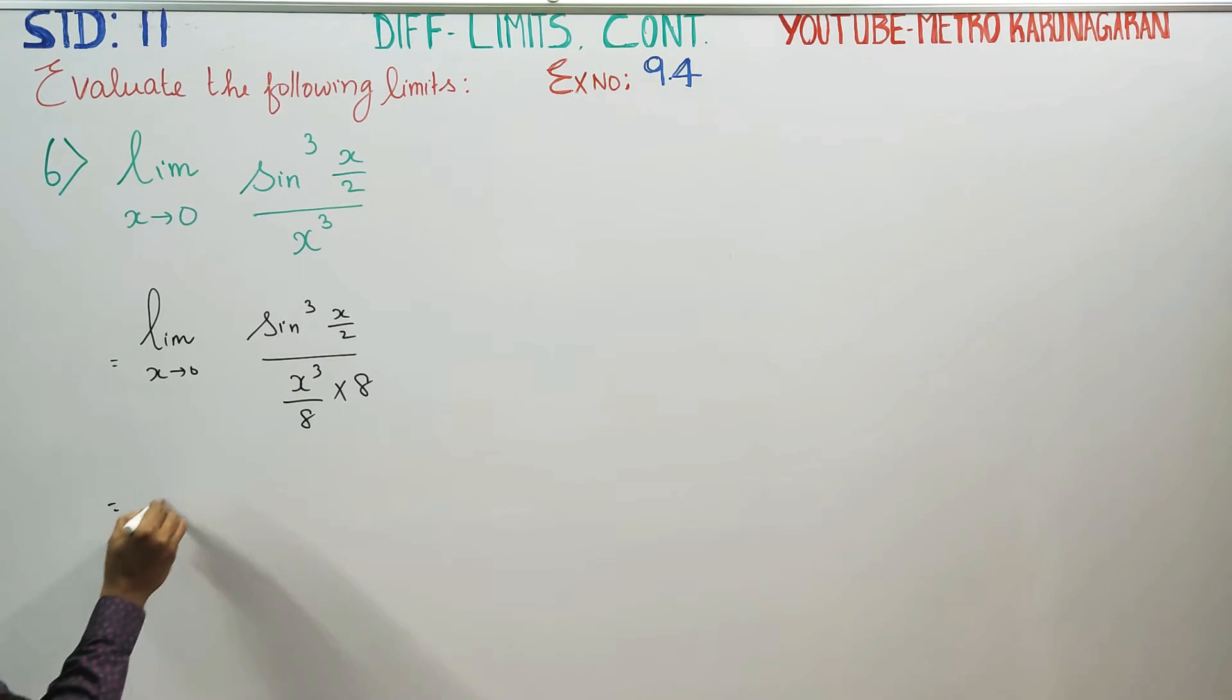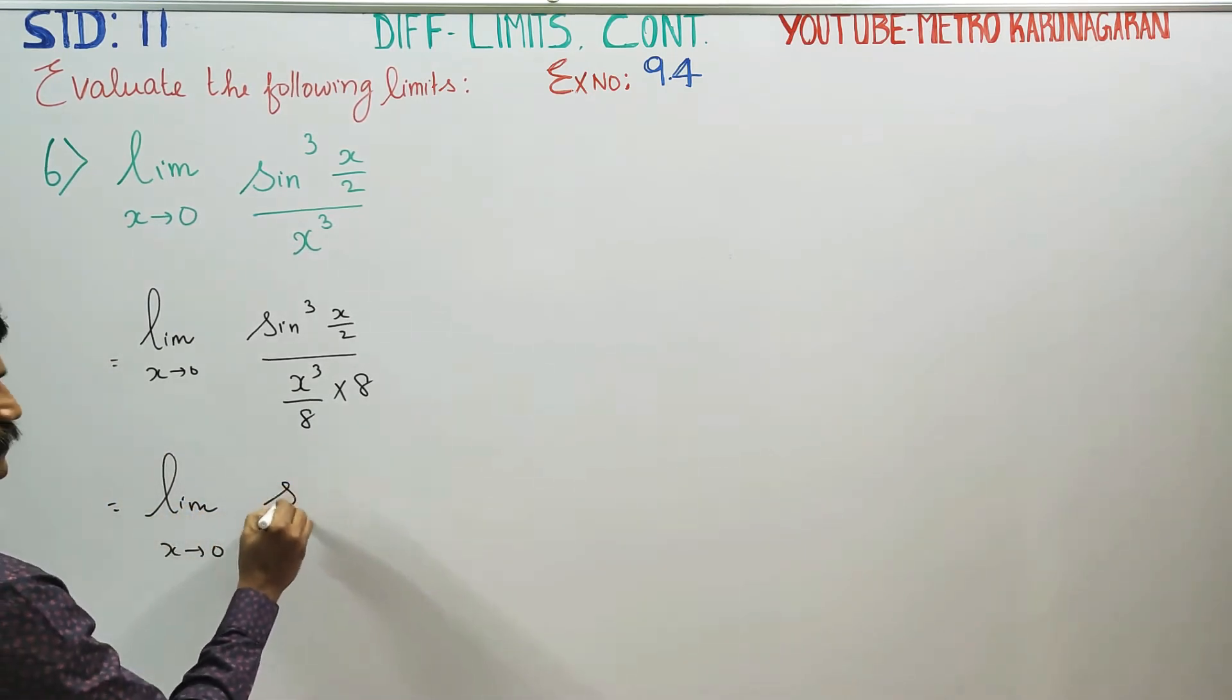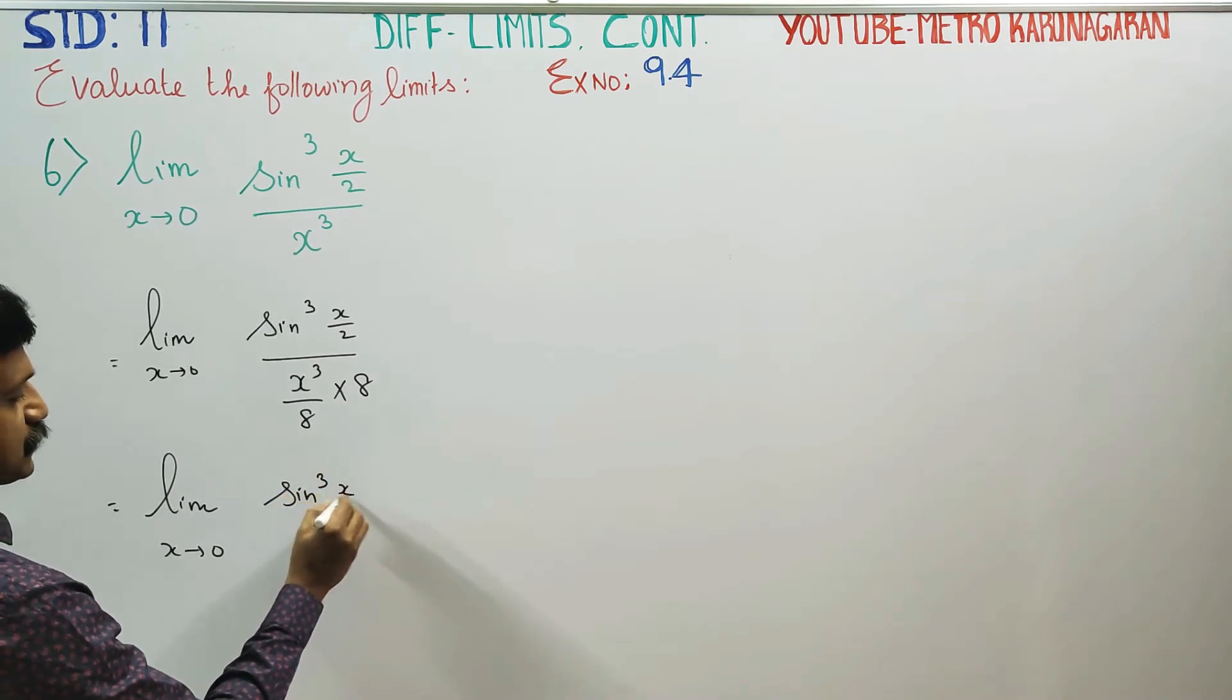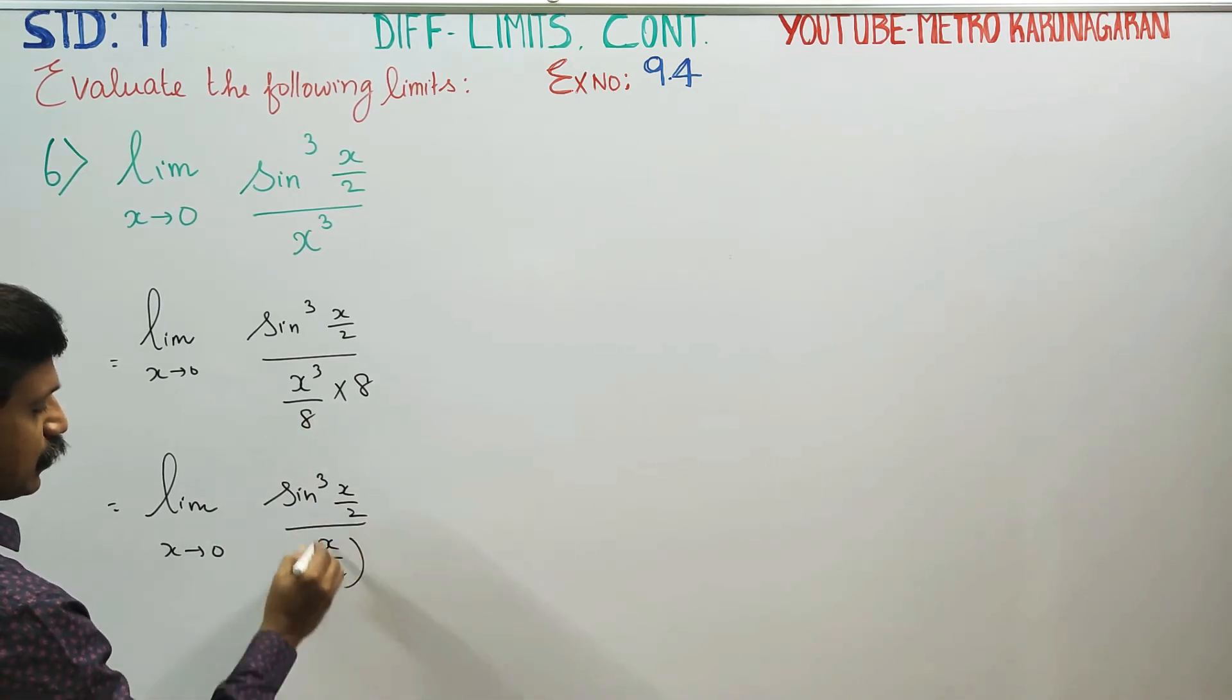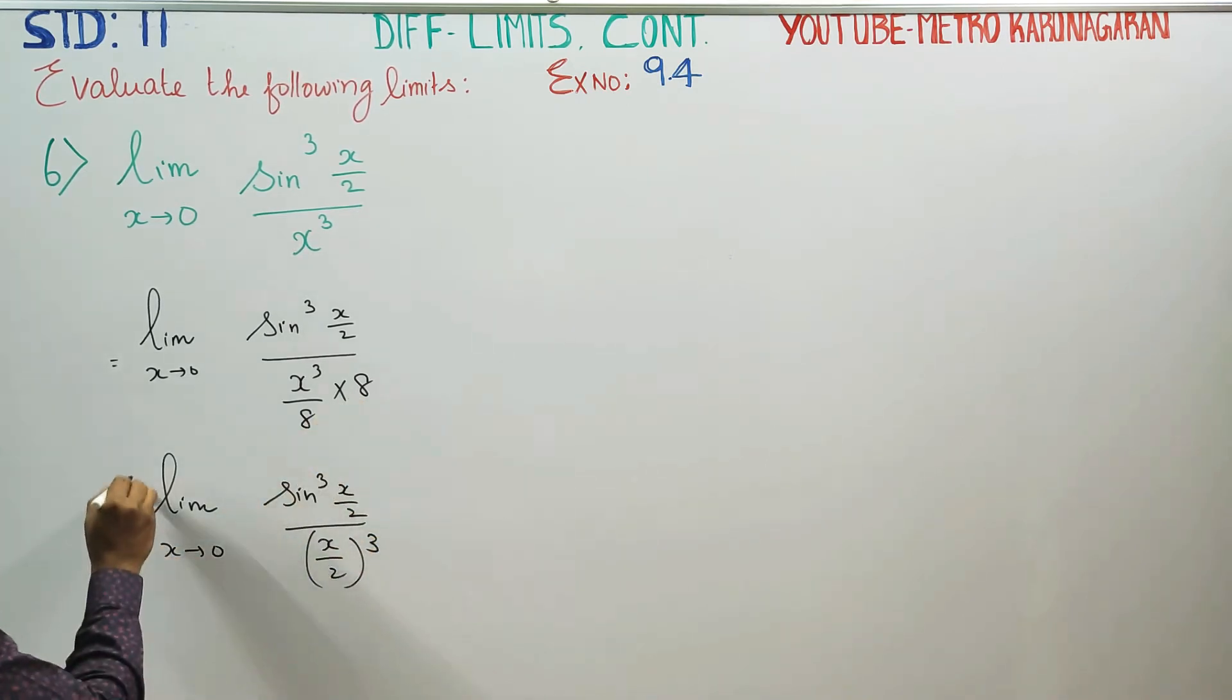Next, limit x turns to 0: sin³(x/2) divided by x³/8 can be written as (x/2)³. 1/8, 1/8, 1/8. Limits constant.